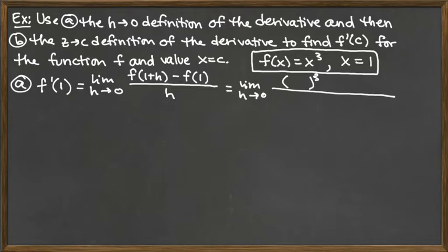The thing that lands in that empty set of parentheses is what's in parentheses in the notation f of 1 plus h. So 1 plus h lands in the parentheses. Then whatever follows the subtraction sign is the other function value plugged in. Be aware that if the function has more than one term, like this one doesn't — it's just the single term x cubed.